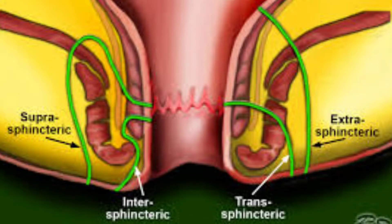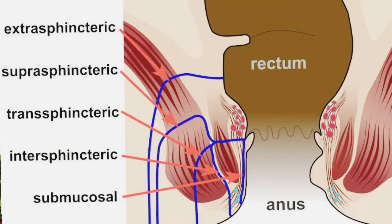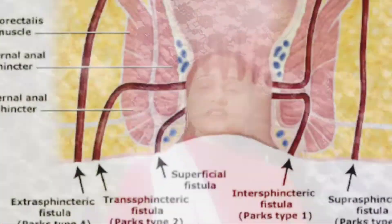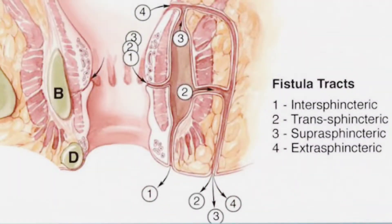Trans-sphincteric can have multiple openings. The next variety is supra-sphincteric, which begins above the internal sphincter and below the external sphincter, and opens into the skin. Next is inter-sphincteric, which crosses the internal sphincter and opens into the anus. And the last variety is submucosal fistula, which never crosses any of the sphincters and is very superficial, at the region of the submucosa.